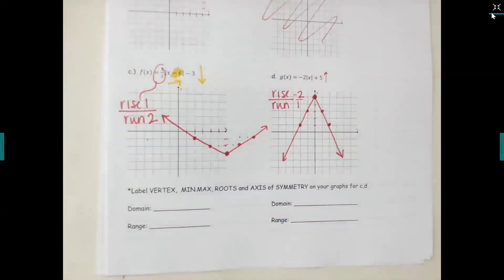Even though some V's are fatter, some skinnier, some open down — it doesn't matter, they all belong in the absolute value family. Turn the page when you're ready. You've already finished two families, and we only have two more left.